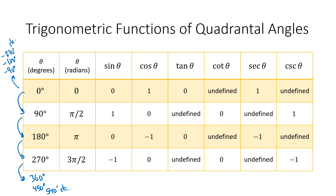Sometimes our trig functions are undefined for quadrantal angles. Let's think about why the tangent is undefined at 270 degrees. Using the point (0, −6), we have a = 0, b = −6, r = 6. Tangent is b over a, so that's −6 divided by 0 — and since we can't divide by zero, the tangent is undefined. For some quadrantal angles, certain trig function values are undefined for exactly this reason.